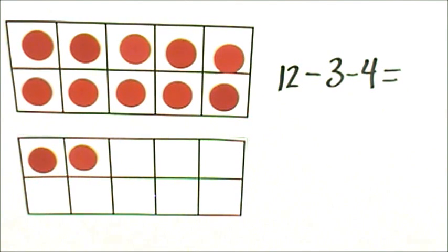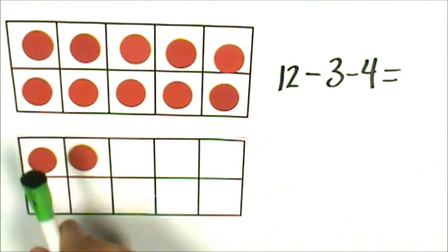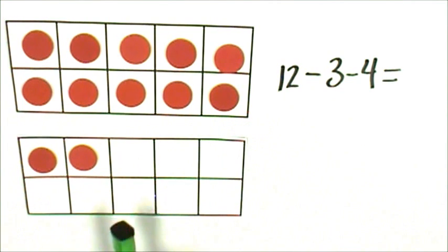Let's subtract 12 minus 3 minus 4 in order from left to right. First, I represented 12 on the double 10 frame. The 10 frame is full, that's 10, 11, 12.